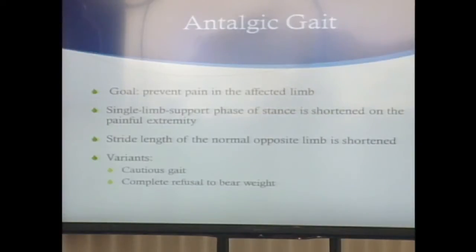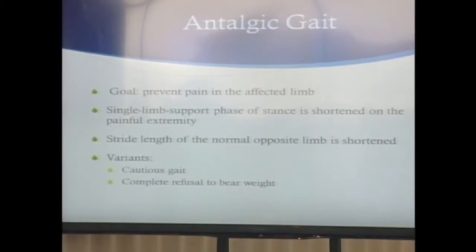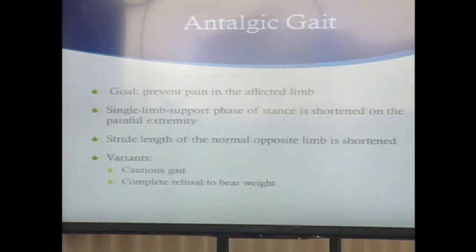What is an antalgic gait? The goal is to prevent pain in the affected limb. The single limb support phase or stance phase in the limb that hurts is shortened, and therefore the stride length of the opposite limb is also shortened because you're trying to get off that painful limb as fast as possible. Variants include complete refusal to bear weight and the cautious gait, which you'd see in a discitis situation.